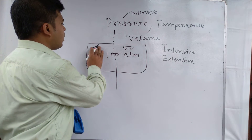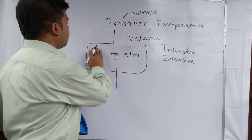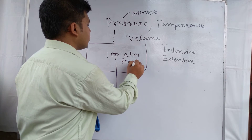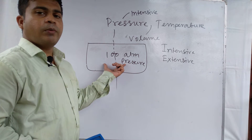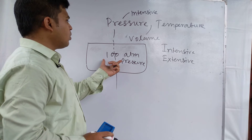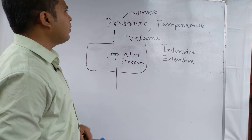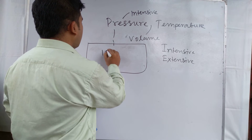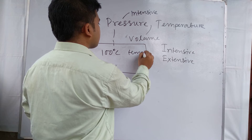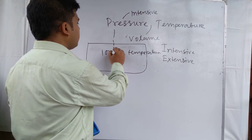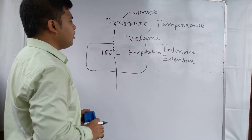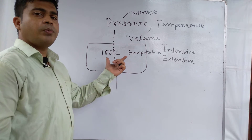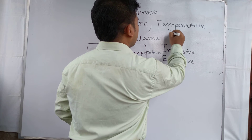Since the pressure cannot be divided into 50 and 50 atm by mentally partitioning the system, pressure is an intensive property. Similarly, if a system is at 100 degrees centigrade and we mentally partition it, the temperature of each region cannot become 50 degrees — the temperature cannot be halved — so temperature is also an intensive property.